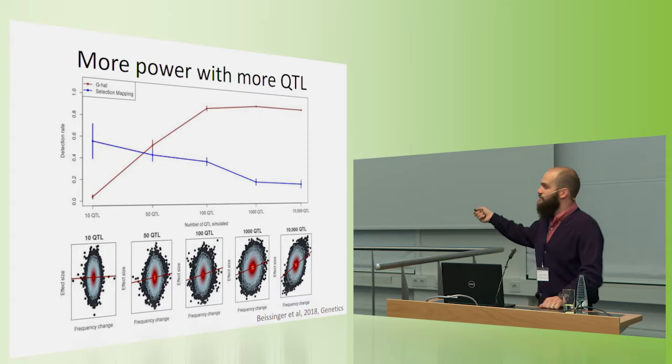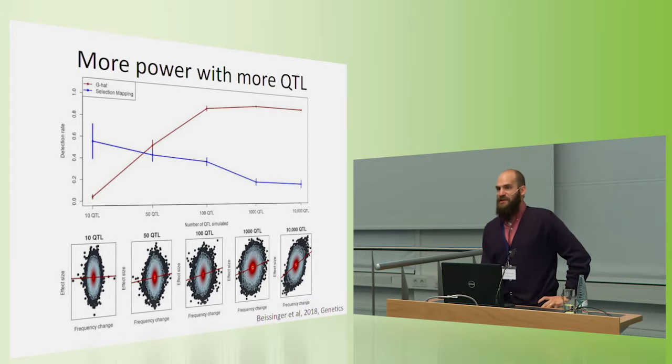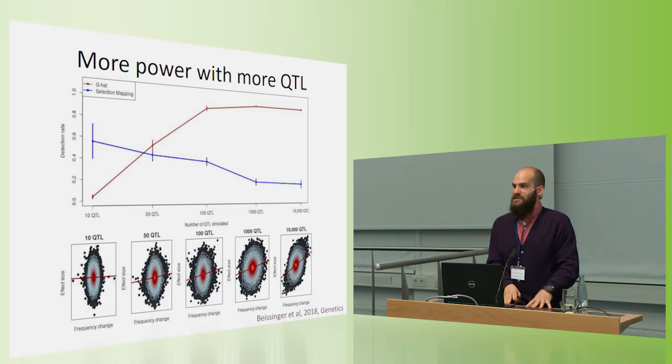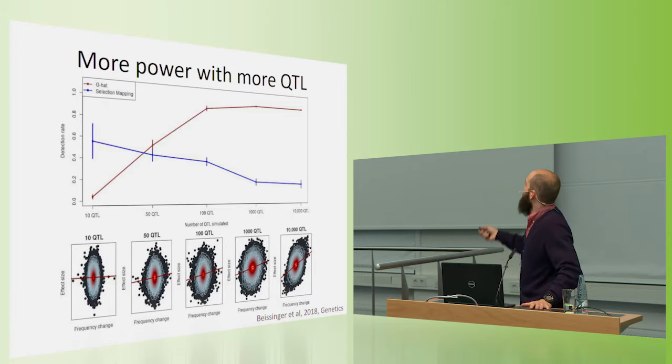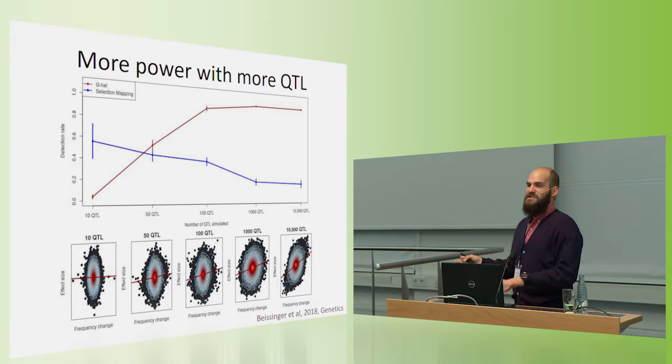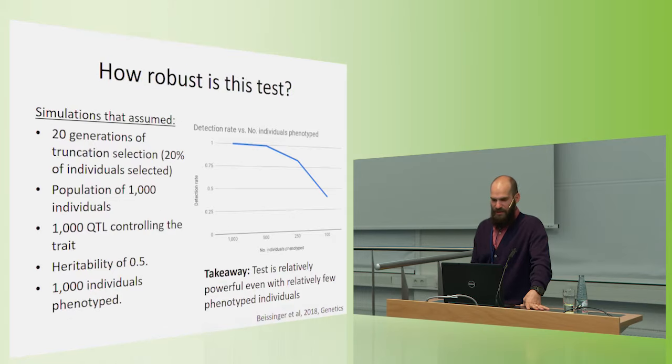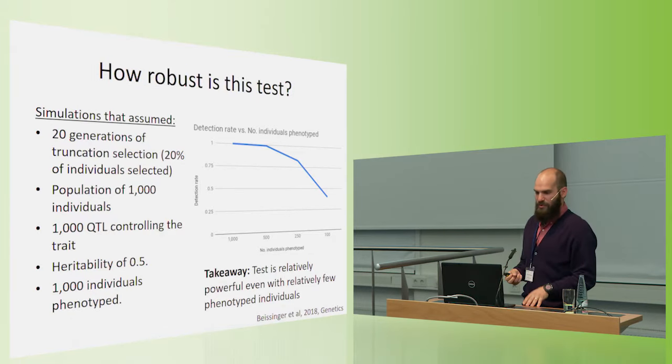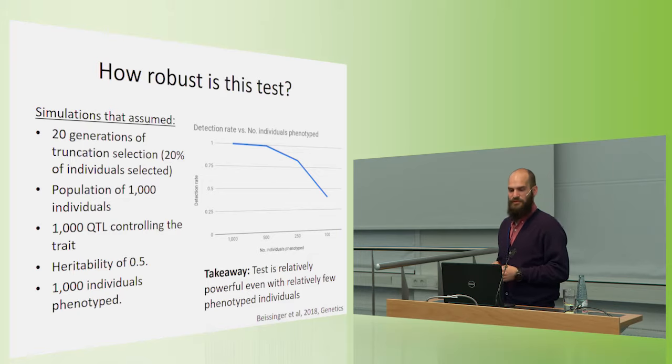So when we have a 10 QTL scenario, that's not a very polygenic trait. Selection mapping lets you find the genes. But when we have a 10,000 QTL controlling a trait, just give up on finding the genes, but we can test which are the important traits.